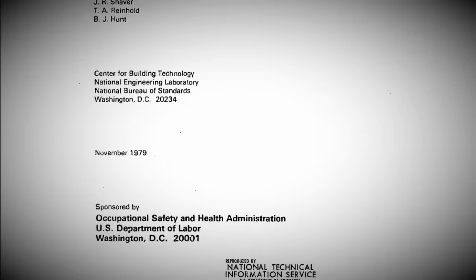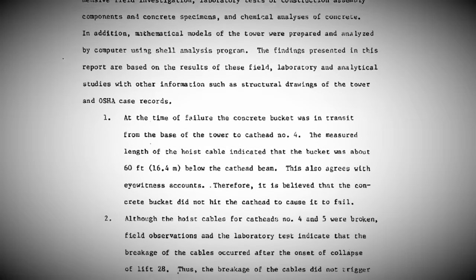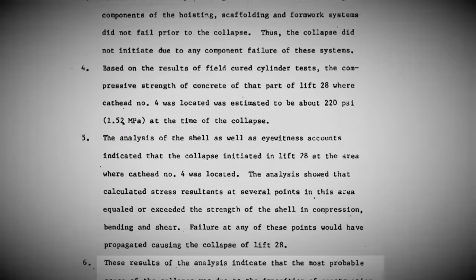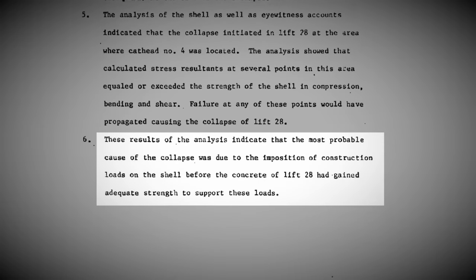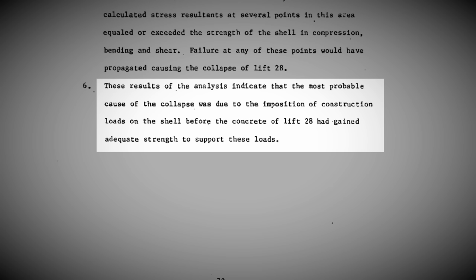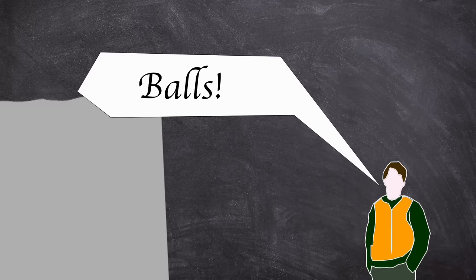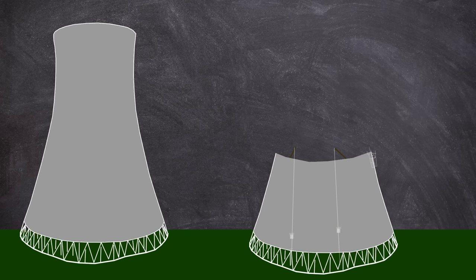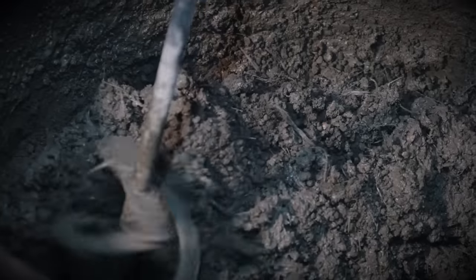The Bureau of Standards summed up in its conclusions: The imposition of construction loads before the concrete of lift 28 had gained adequate strength to support these loads. Long story short, the concrete hadn't been given enough time to cure. But that wasn't the whole story. Our good old friend, corner cutting, reared his ugly penny pinching head. OSHA found that rather than following the carefully planned positioning of the cranes for raising the buckets, different positions were used to allow more buckets to be lifted, and thus pull the concrete more quickly. They also found a worrying lack of field tests of the concrete they were making, allowing inconsistencies in each lift.